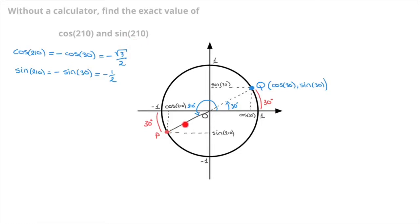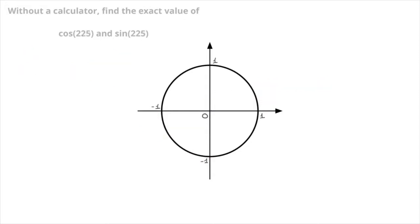Now, the method we've just used — by looking at the point diametrically opposite point P — will always work when we're working in the third quadrant. Let's look at another example. Again, we're told without a calculator to find the exact value of both cosine of 225 and sine of 225. Starting from the point with coordinates (1, 0), the angle 225 is found by moving anticlockwise around the unit circle, and that would be approximately here.